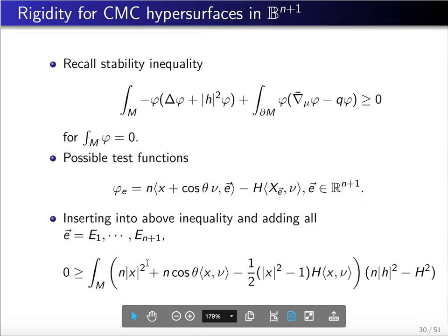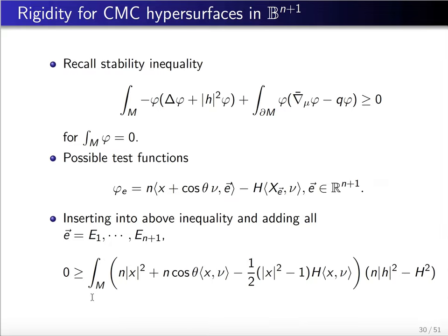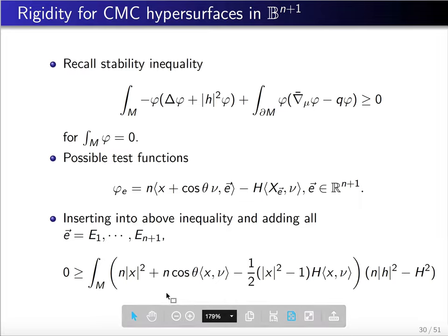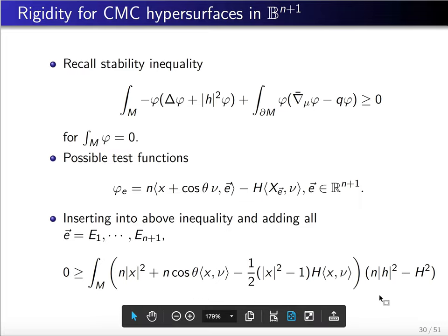We find that phi_e satisfies that the normal derivative minus q·phi vanishes, and the Jacobi operator on phi can be computed. Adding over all coordinate unit vectors, we arrive at an inequality. With a minus sign, the stability positivity becomes negativity here. We then examine this integration: one term is always non-negative by Cauchy-Schwarz inequality.